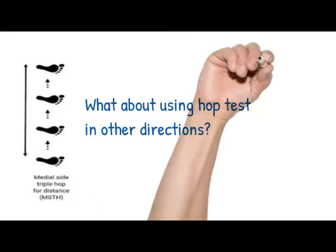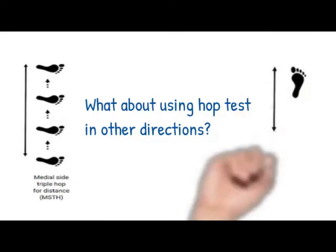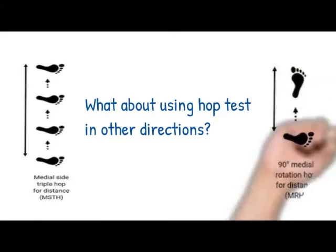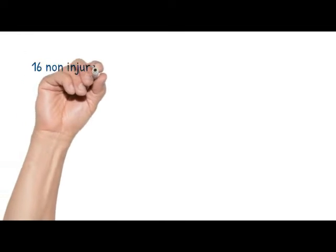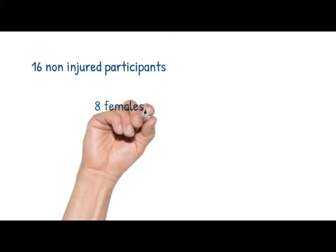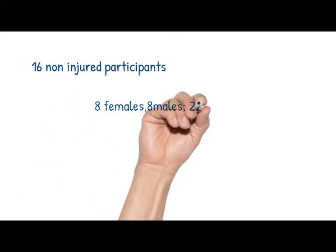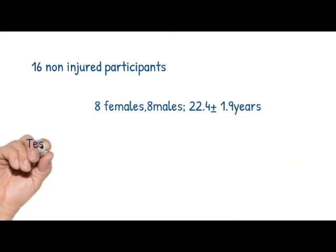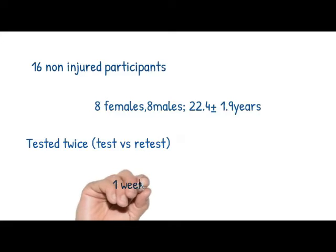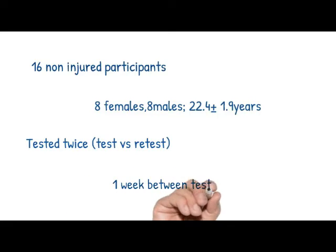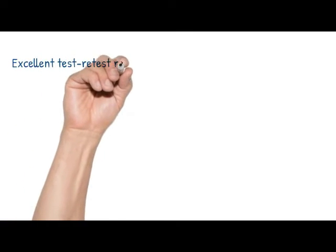What about using hop tests in other directions — using the medial side triple hop for distance or the 90-degree rotational hop for distance? In this study, 16 non-injured participants were recruited, consisting of eight females and eight males, at an average age around 22 years old. They were tested twice — test and retest — with one week between each test.